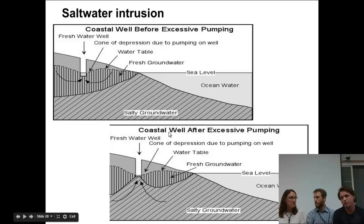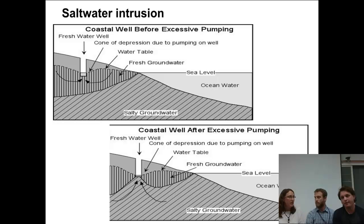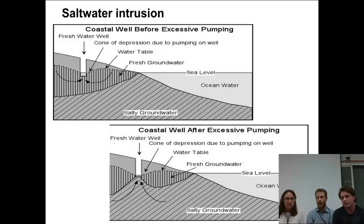Initially, the salty groundwater is coming from the ocean and it's beneath the fresh groundwater because it's more dense. We have to think about the density of the water and that layering within the aquifer — that's why it's at the bottom. This is a huge problem because if you're using this water to drink, you can't drink saltwater. If you're using it to irrigate your crops, you can't do it with saltwater — you'd be killing all kinds of life. Saltwater intrusion is a big problem.